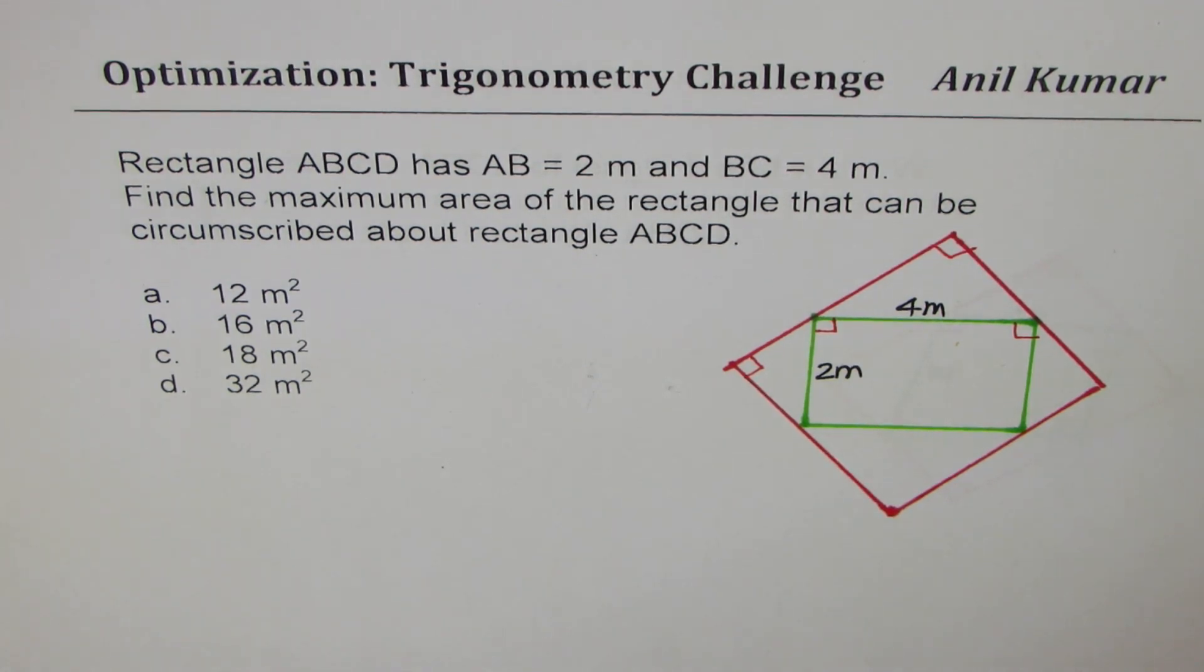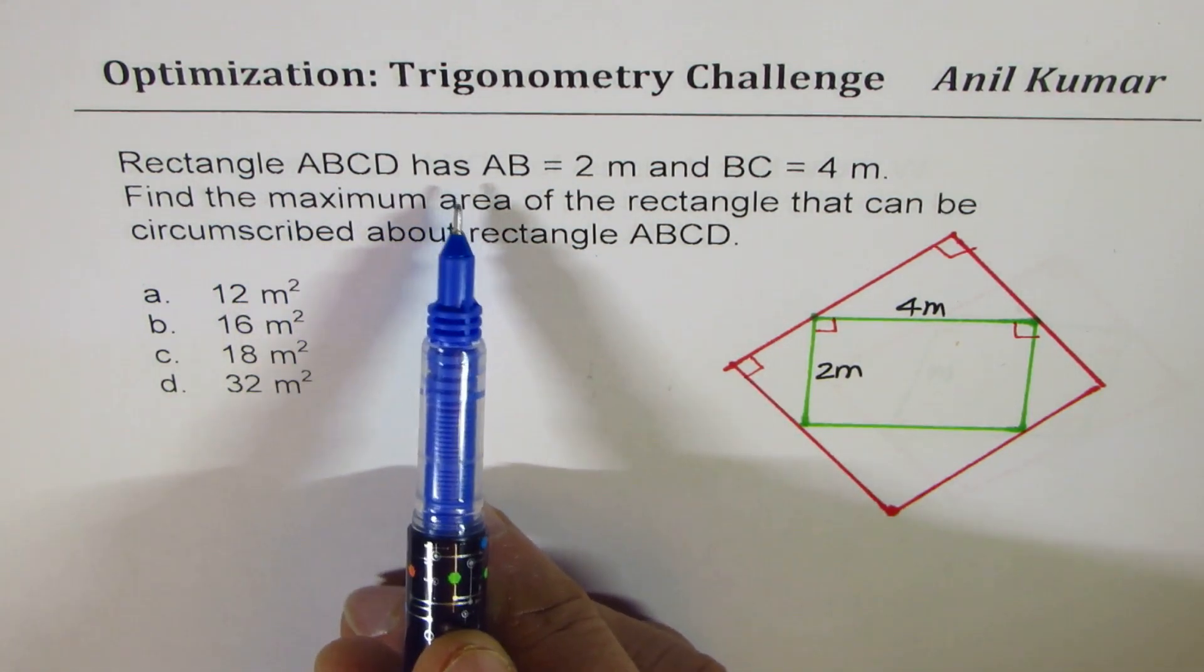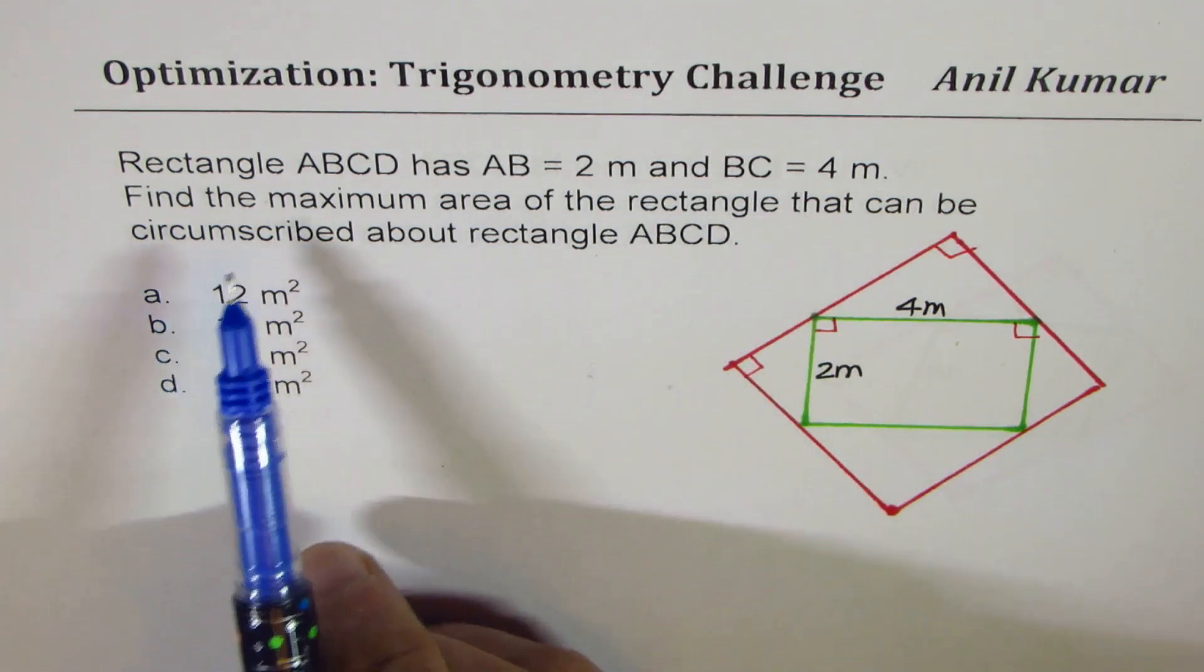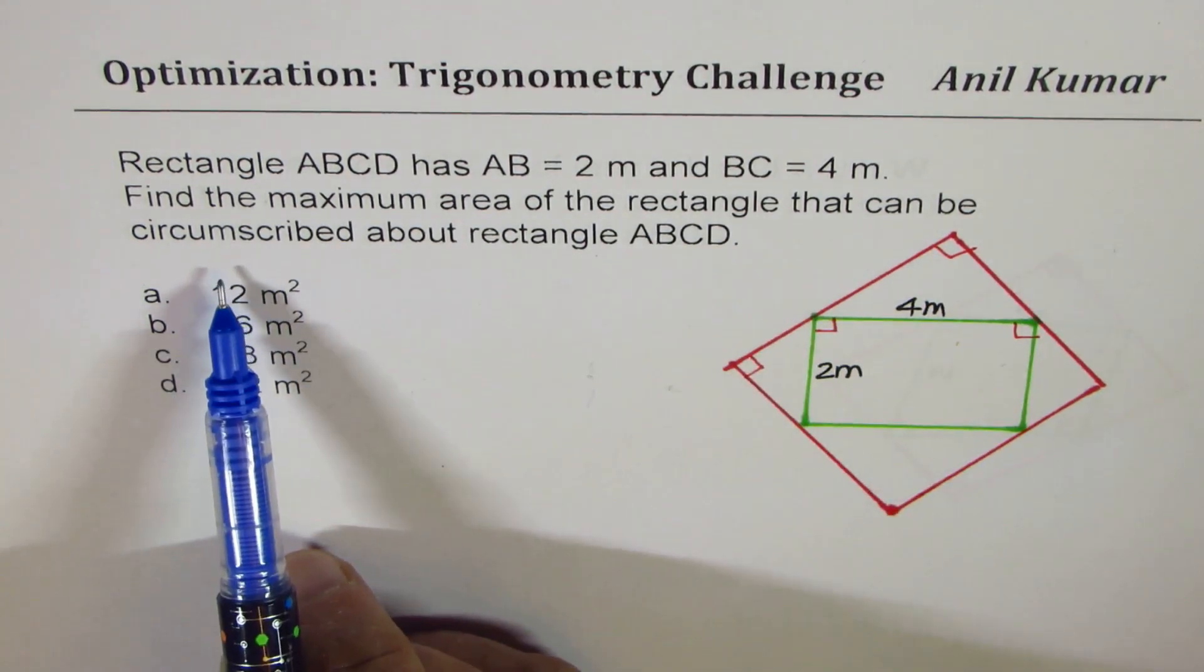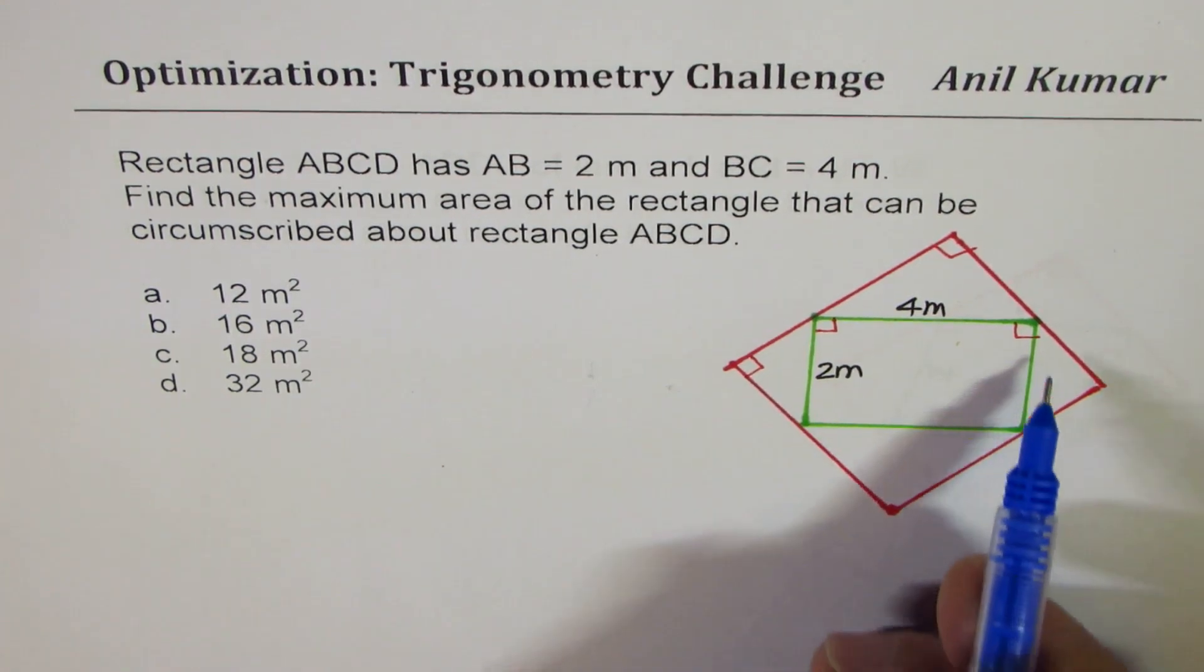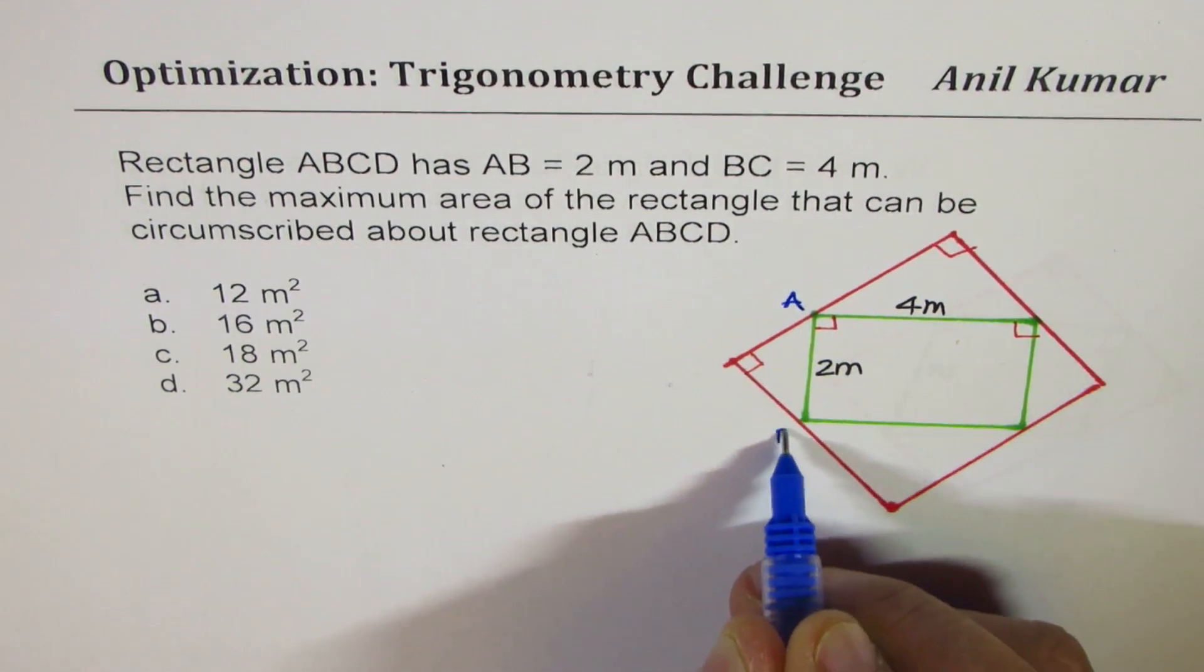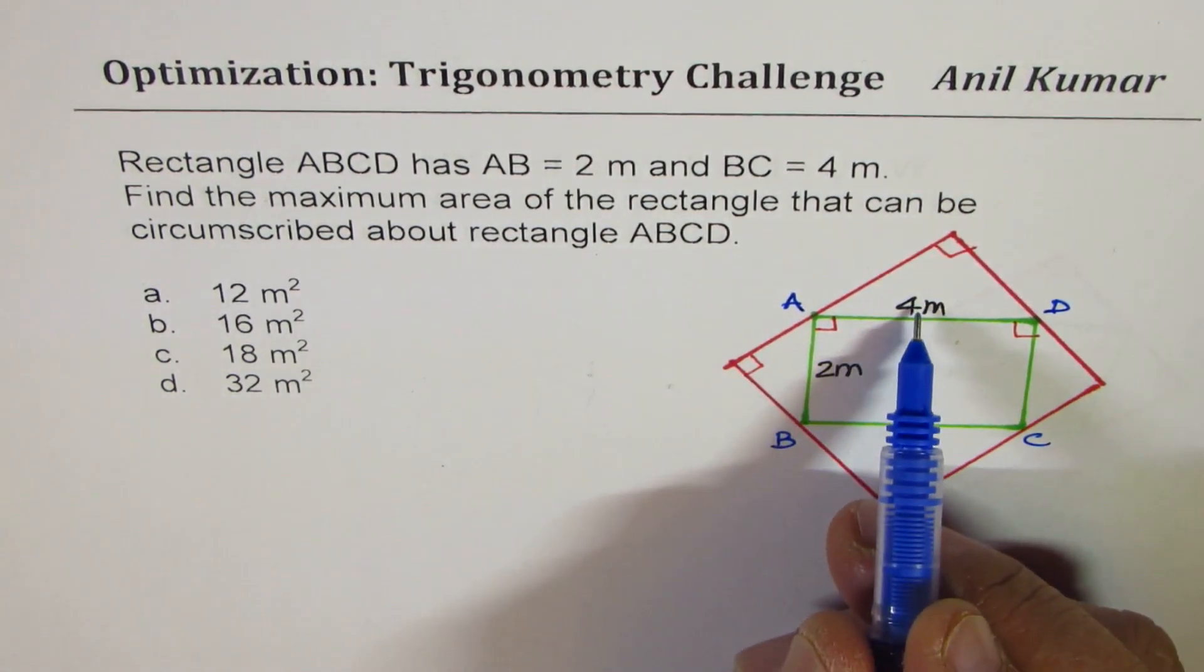A similar question can be seen in AB calculus and IIT-JEE test papers. The question here is: rectangle ABCD has AB equals to 2 meters, BC equals to 4 meters. Find the maximum area of rectangle that can be circumscribed over the rectangle ABCD. So this is the rectangle given to us, ABCD, whose dimensions are 2 centimeters by 4 centimeters.